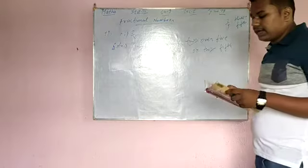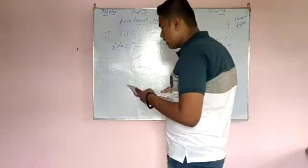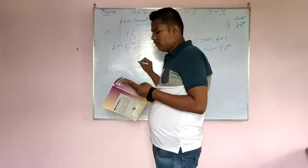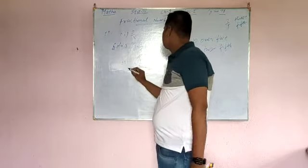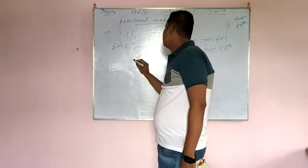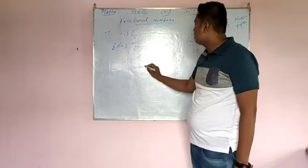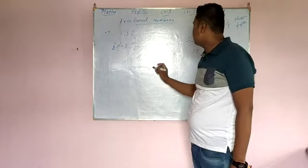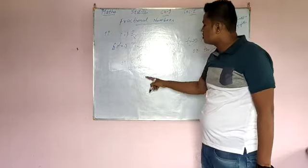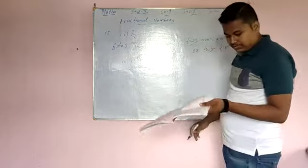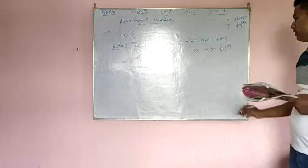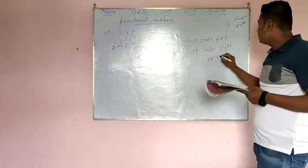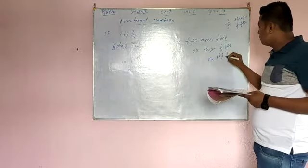Now question number 2 is: write the following fractional number. It is given in words and you have to write the fractional number. In question 13, you have to write the numerator of each of the following.